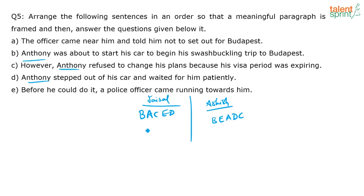B is the topic sentence because it introduces the subject. 'Mr. Anthony was about to start his car to begin his swashbuckling trip to Budapest.' Everyone agrees on that.